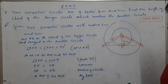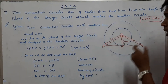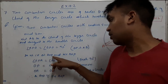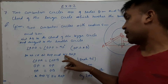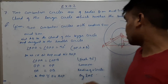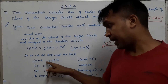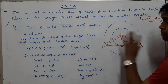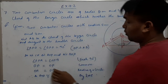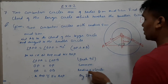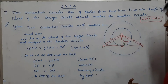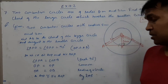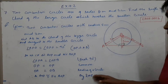In triangles AOP and BOP: angle OPA equals angle OPB, both being 90 degrees; OP equals OP (common side); OA equals OB, since both are radii of the same circle. Therefore triangle AOP is congruent to triangle BOP by the RHS theorem. Since the triangles are congruent, AP equals BP.